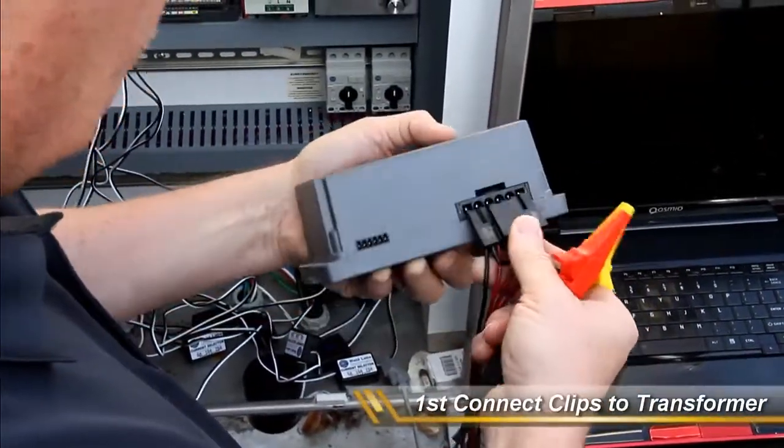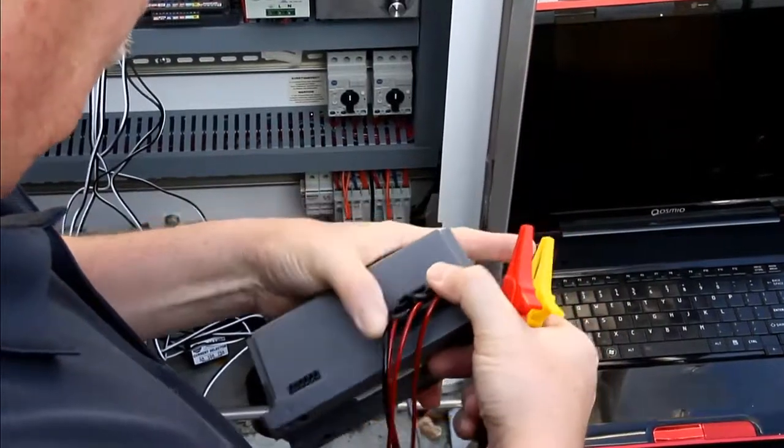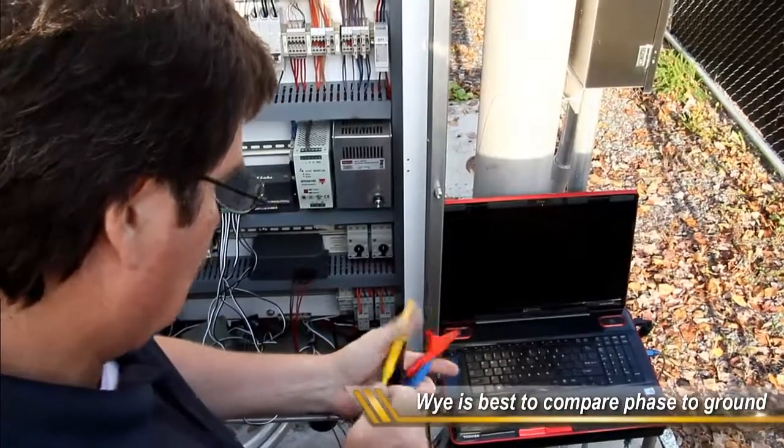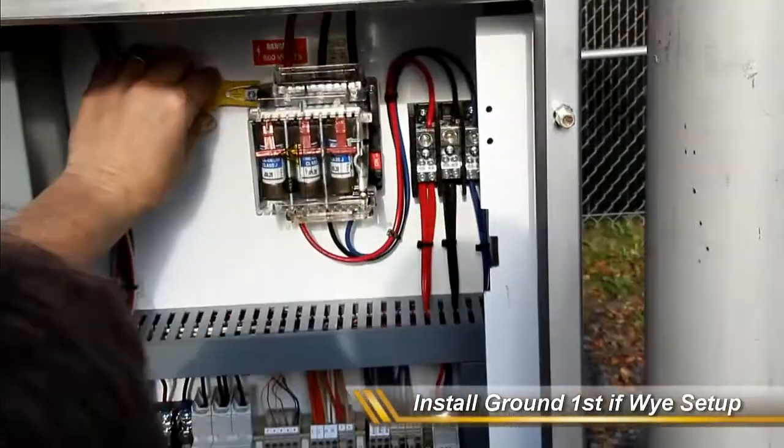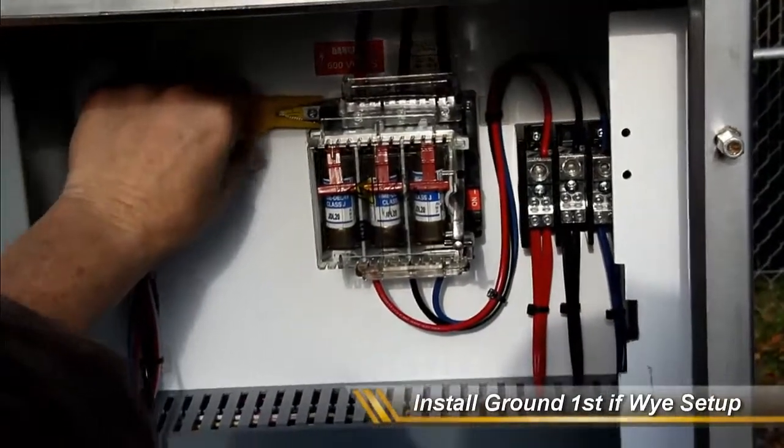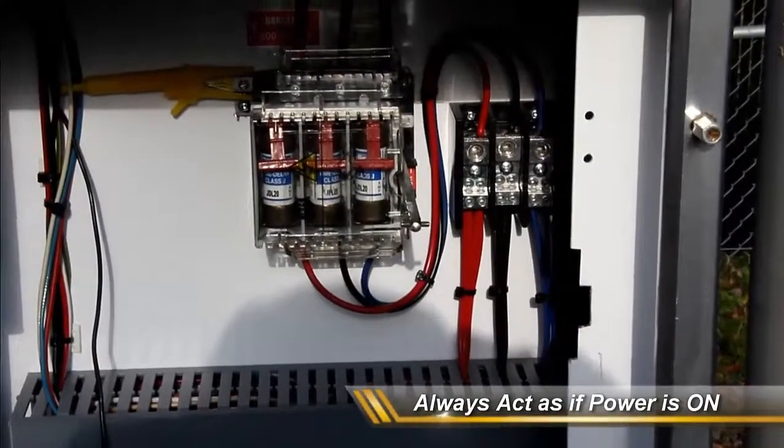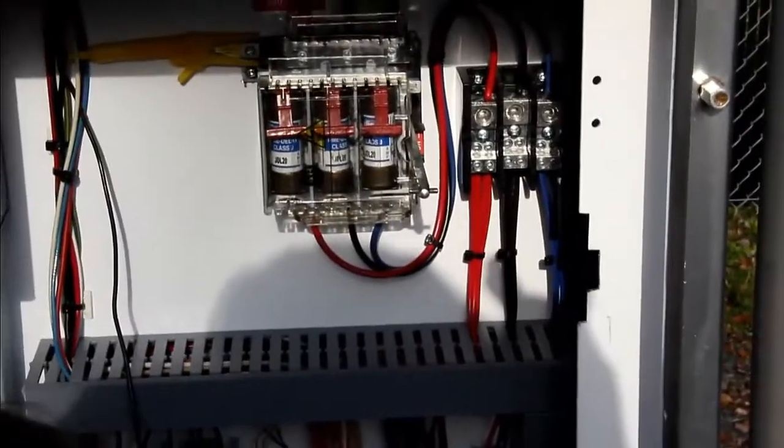Again, the first thing that we want to do is on our installation is to plug in the cable. After we plug in our cable, we want to select our ground, and then just like before, we want to use phase one, phase two, and phase three.